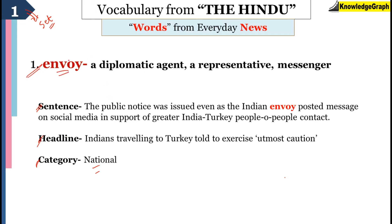The first word is envoy. Envoy means a diplomatic agent — a kind of representative or messenger. Basically, when a person goes from India to, let's assume, the United Nations or somewhere, someone who is representing our country or acting as a messenger will be called an envoy. The sentence says: 'The public notice was issued even as the Indian envoy posted a message on social media in support of greater India-Turkey people or people contact.' So envoy means someone who is a messenger or a representative of a particular country. You can search this headline on Google with 'The Hindu' to find the article.